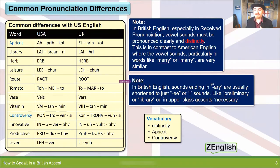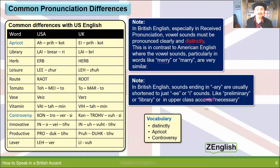Another note: British English sounds like the ending in 'airy' are usually shortened to just 'e' or 'i', like in 'preliminary' or 'library'. And in some upper class accents, even words like 'necessary' are shortened. You might hear this quite a lot.